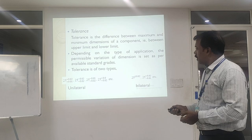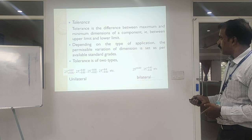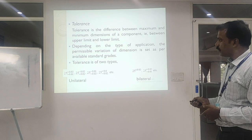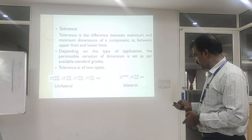Tolerance is the difference between the maximum and minimum dimensions of the component — that is, between your upper limit and lower limit. When coming to tolerance, you have two types: one is called unilateral tolerance and the other is called bilateral tolerance. Unilateral tolerance means the deviation is only in one direction, either positive or negative. Bilateral tolerance means the deviation is in both directions — positive as well as negative.